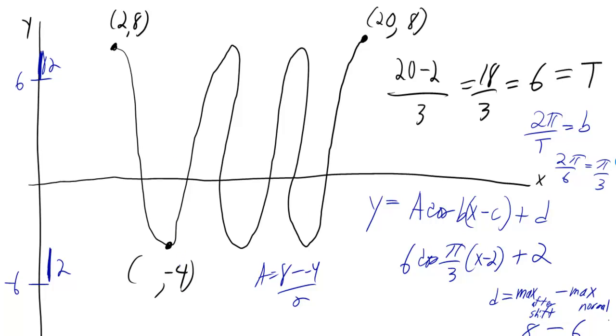They told you the y-coordinate of the minimum was -4. They didn't give you the x-coordinate, though. But the first thing you can do is what I did here in black. You can find the distance of three cycles and divide by three. Well, that's 18—20 minus 2. And if you do 18 divided by 3, you get 6, so the period is 6.